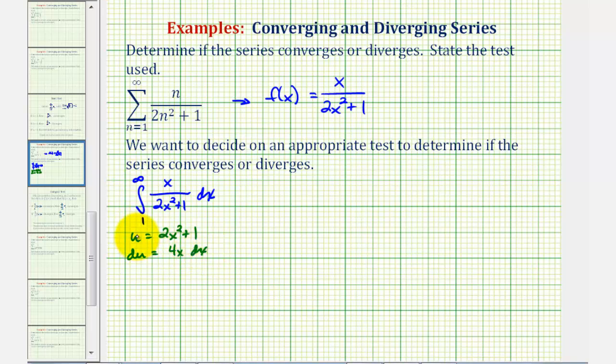We'll notice if u is our denominator, then we're left with x dx. Let's go ahead and solve this for x dx by dividing both sides by four, which means x dx is equal to one-fourth du, or du divided by four.